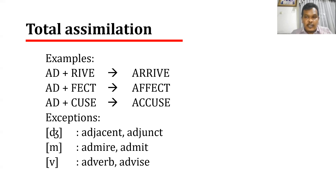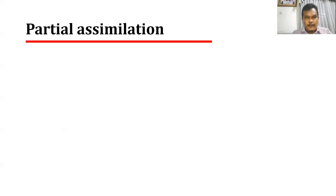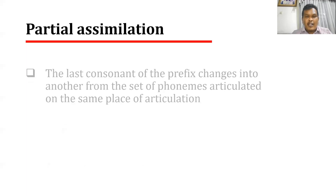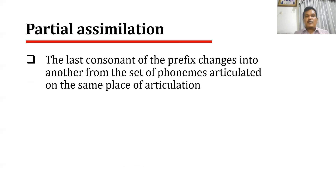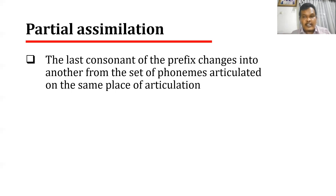The other type of assimilation is partial assimilation. In partial assimilation, the sound is not changed into the sound which is identical, but the sound is changed into another sound from the set of phonemes articulated at the same place of articulation.